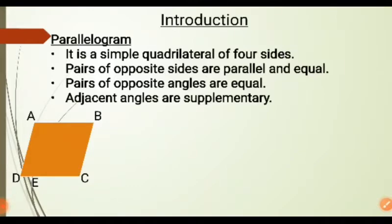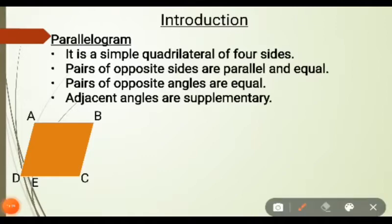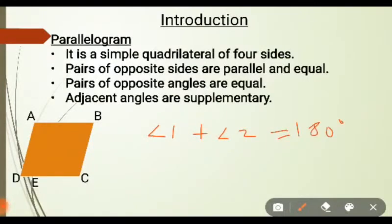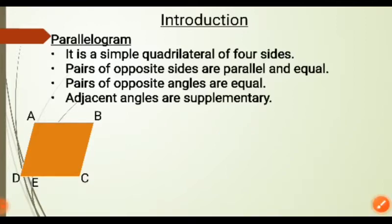The next property says that adjacent angles are supplementary. Now, what do you mean by supplementary angles? We have learnt this in our previous classes. If we have two angles — angle 1 and angle 2 — and we add these two angles, we get 180 degrees. This is called supplementary angles. So in this parallelogram, angle A plus angle B is supplementary, angle B plus angle C is supplementary, angle C plus angle D is supplementary, and angle D plus angle A is supplementary.